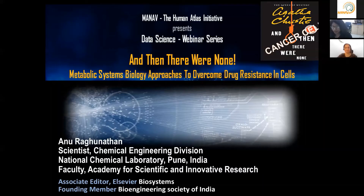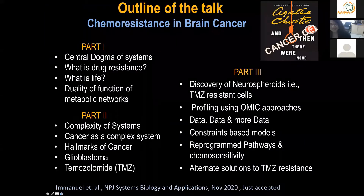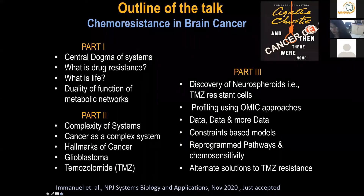As the title suggests, my talk today is on systems biology approaches to overcome drug resistance in cells. Although the title and outline may seem esoteric to those not familiar with this field, throughout this talk I will walk you through fundamental concepts and definitions in systems biology and some of the methods used in my laboratory to understand chemo-resistance of brain cancer cells. My lab uses systems approaches to identify strategies to kill both antibiotic-resistant pathogens as well as chemo-resistant cells; however, today's talk is based on our research on glioblastoma, or brain cancer.